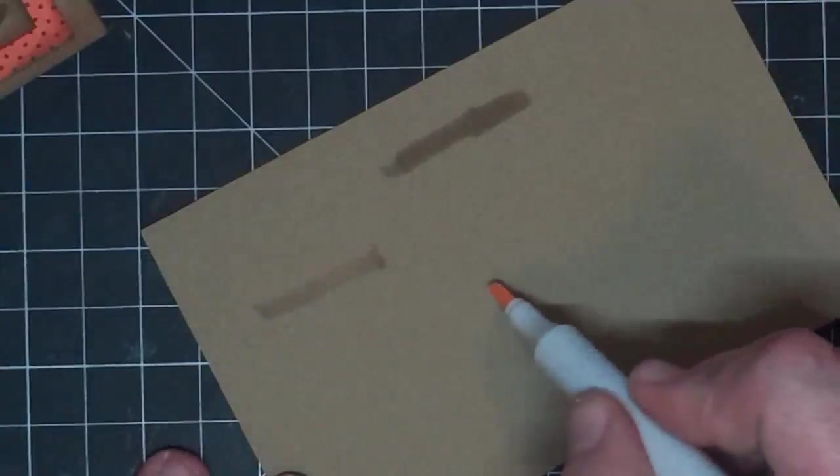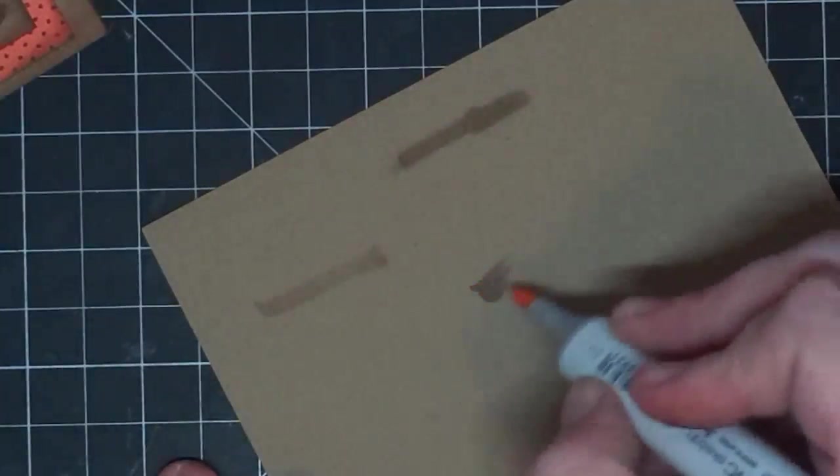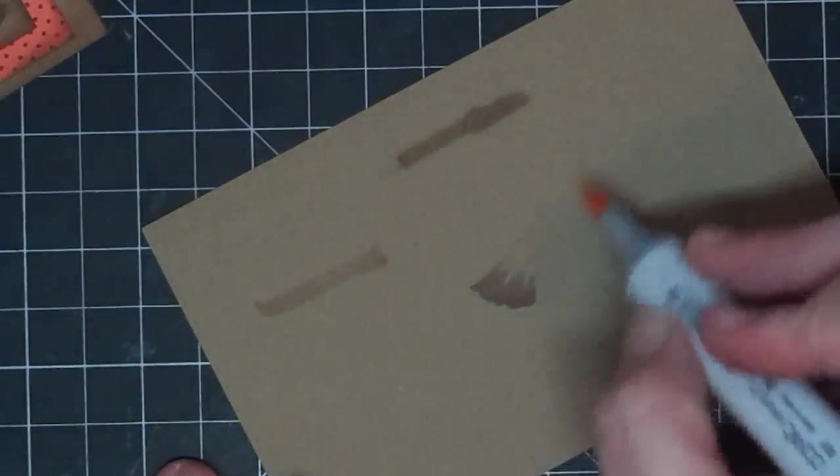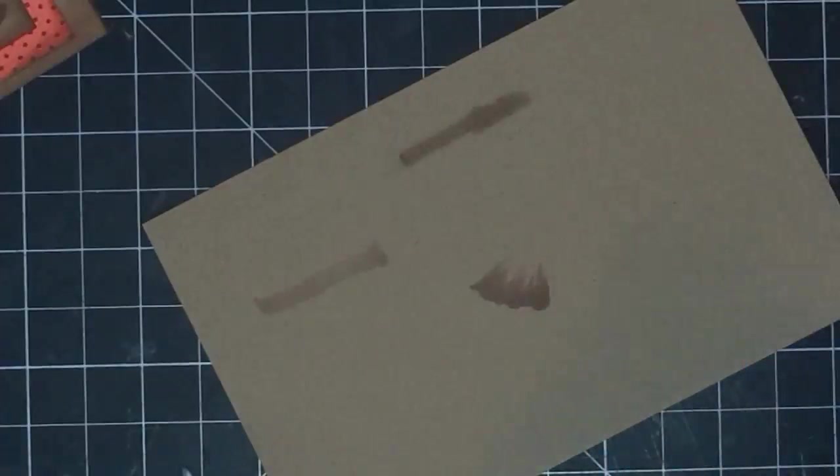But this guy blends into the paper so well. And you can just kind of do these little flick marks. You can kind of do these little flick marks. And it just kind of creates a shadow all on its own. How cool? Let me show you how to do it.